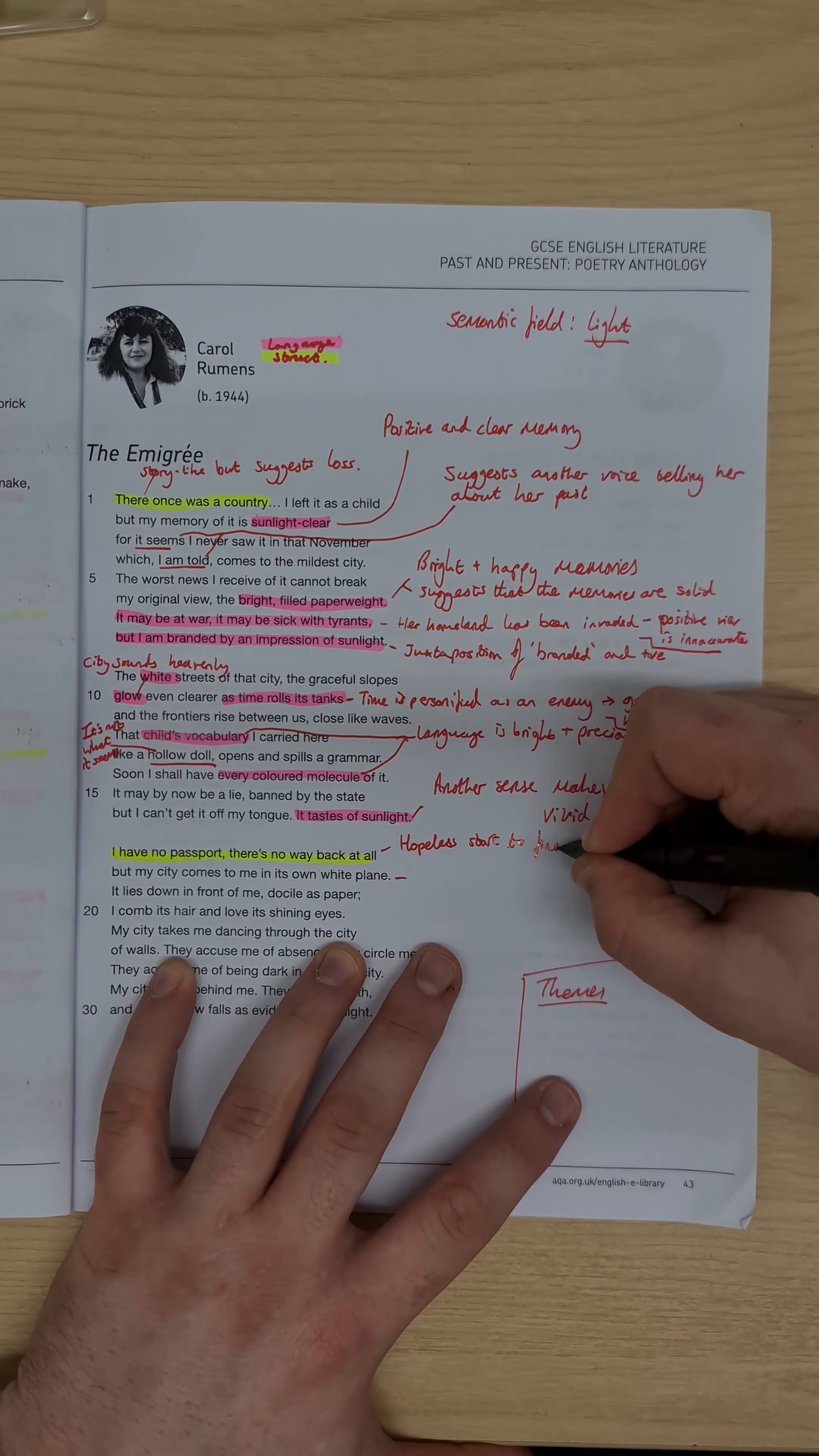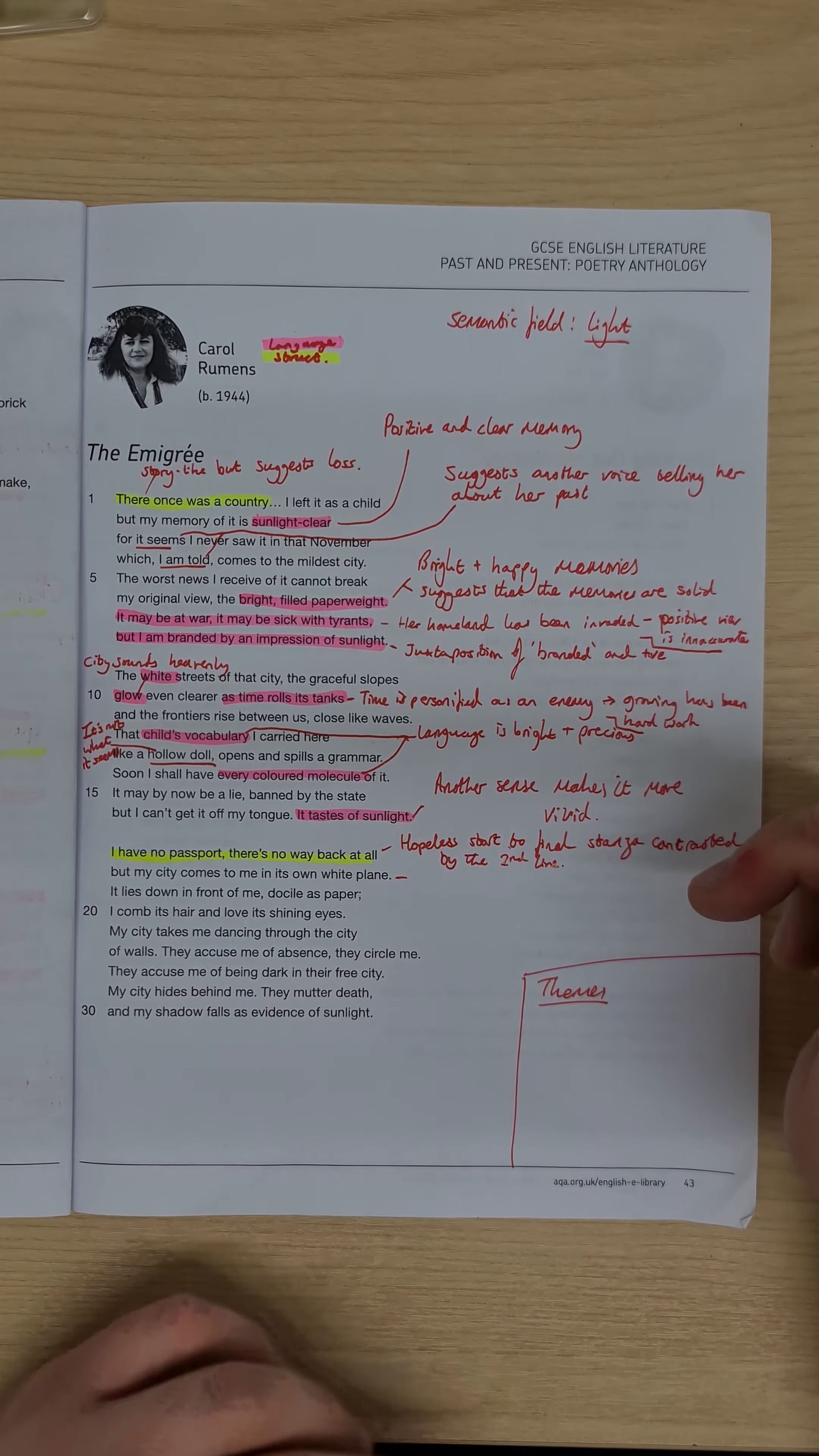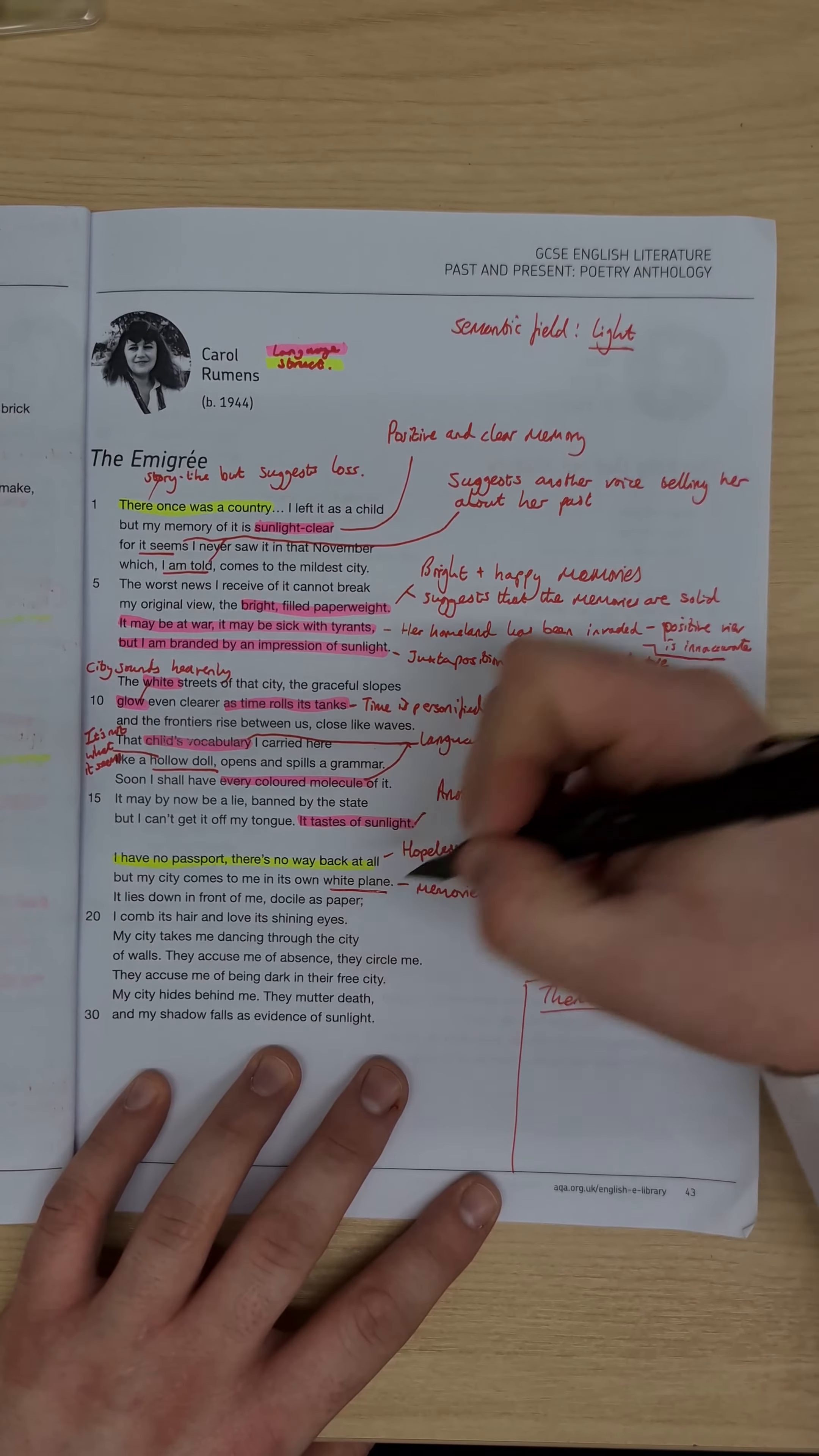to the final stanza contrasted by the second line, and then looking at that second image, the second line that we have there, my city comes to me in its own white plain, could represent the speaker's memories, so we have the memories here, in this phrase of the white plain,